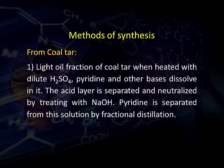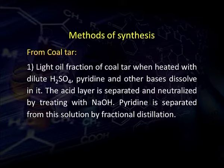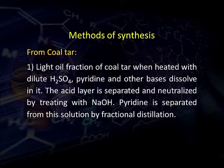Now we will study methods of synthesis of pyridine. Industrially, pyridine can be isolated from coal tar. It is one of the ingredients of coal tar and is found in the light oil fraction of coal tar. As it is basic in nature, when the light oil fraction of coal tar is heated with dilute sulphuric acid, pyridine along with other bases dissolves in the sulphuric acid. The acid layer is separated and neutralized by treating with sodium hydroxide. Pyridine separates out along with other bases, from which it is separated by fractional distillation.